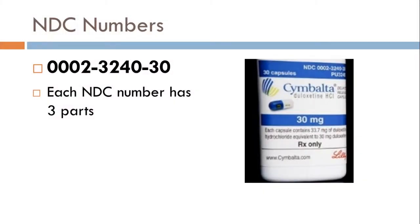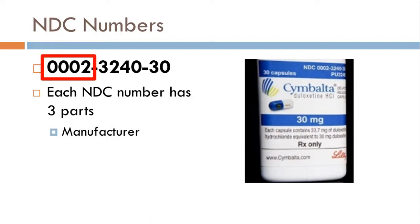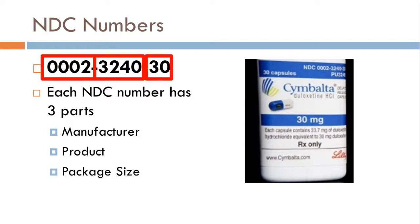In the first slide I've shown a picture of Cymbalta and the NDC number that goes with it. You can see it has three parts: 0002, 3240, and 30. Each of those three sections means something different. The first portion is the manufacturer, the middle part is the product — different products will have different middle four-digit numbers — and then the last section is the package size, whether it's 30 capsules, a hundred, or a pint if it's a liquid.